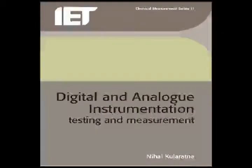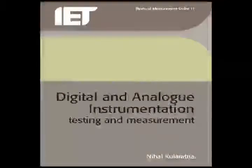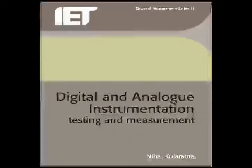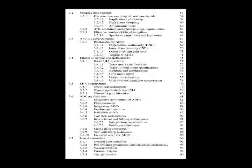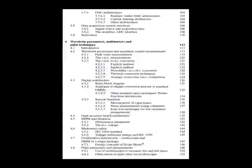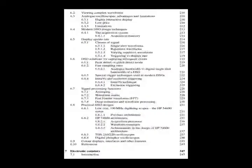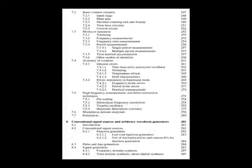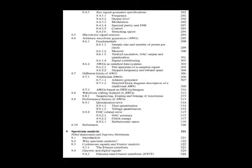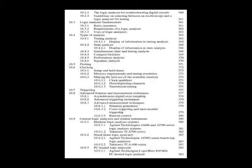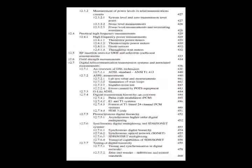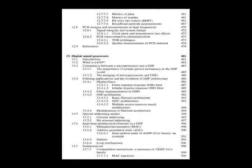Book 4: Digital and Analog Instrumentation Testing and Measurement. This book covers topics like basis of measurement, data converters, waveform parameters, multimeters, oscilloscopes and digital signal oscilloscopes, counters, function generators, spectrum analyzers, logic analyzers, instrument buses, digital signal processors, sensors, and calibration of instruments.